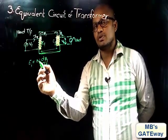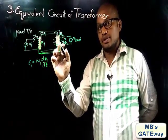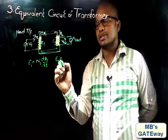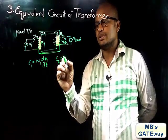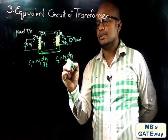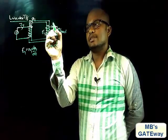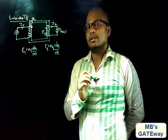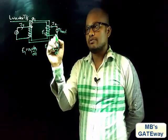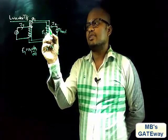As this flux φ1 links with the secondary winding of the transformer, there is an EMF induced in the secondary winding, represented as E2, which is equal to N2 dφ1/dt. Now, as the load is connected, there is a current flowing in the secondary winding — let that be I2. As current flows in the secondary winding, there will be a flux φ2.